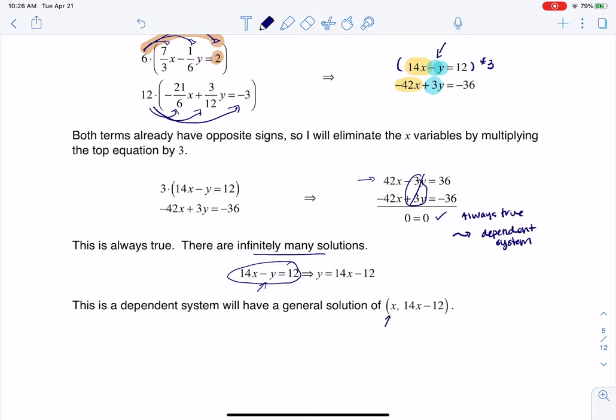So what this is saying is, hey, if you pick an X value, whatever you pick, your Y is going to be 14x minus 12. And that will always be a solution. It's dependent. And there's going to be infinitely many of them because I could pick X being 0, 1, 2, 17, negative 1 half. It doesn't even matter. I could put 0.7, I could put pi in there.